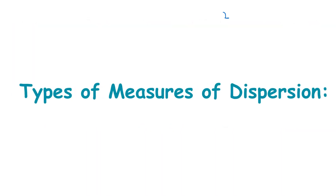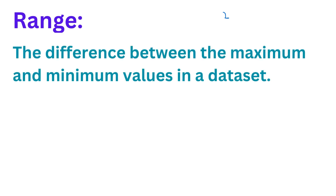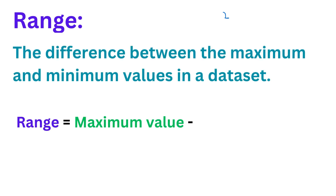Range: the difference between the maximum and minimum values in a dataset. That is, range is equal to maximum value minus minimum value.